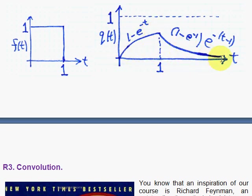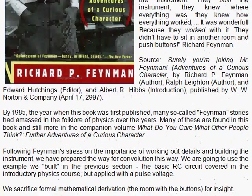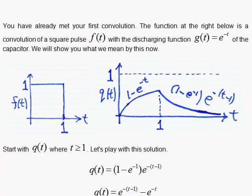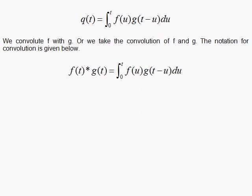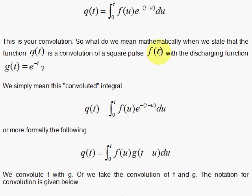And then we considered that we could write this as a convolution given by this form here, that we have two functions. We have the function f of t, which is our applied voltage square pulse, for example, and we have this g of t, which is the generic exponential decay. And by shifting this over, when we apply our function here for the voltage, this we found to be the answer.